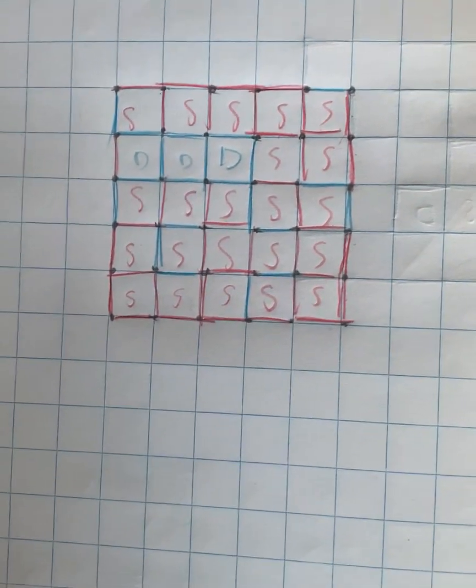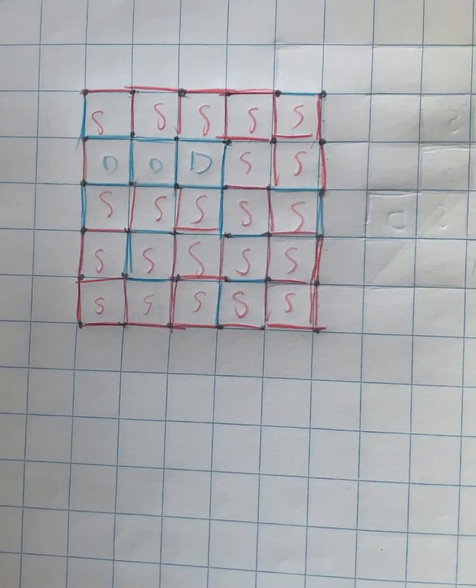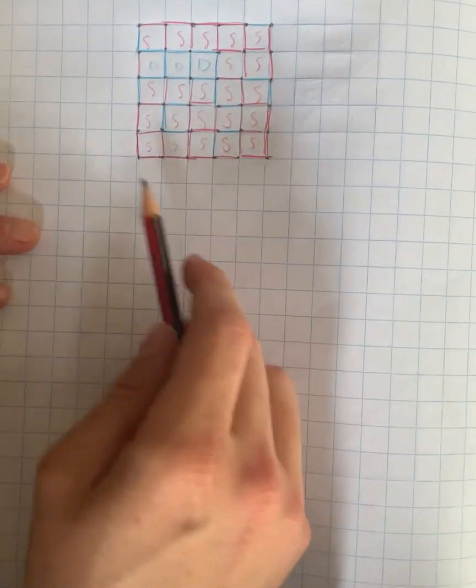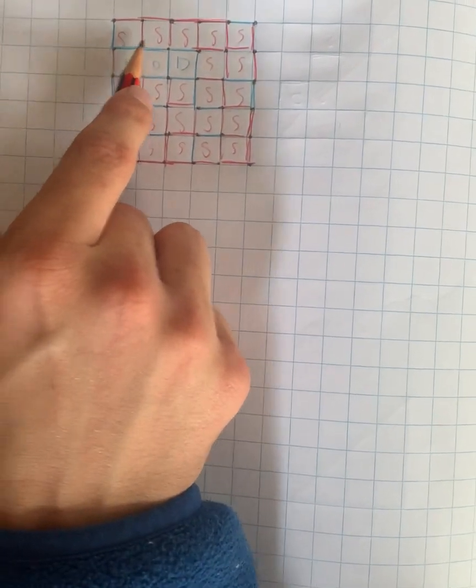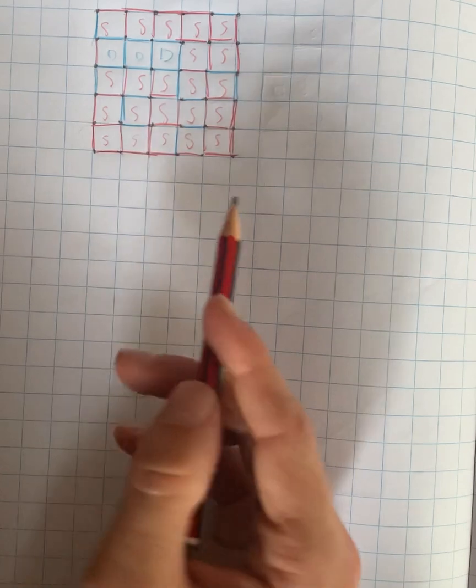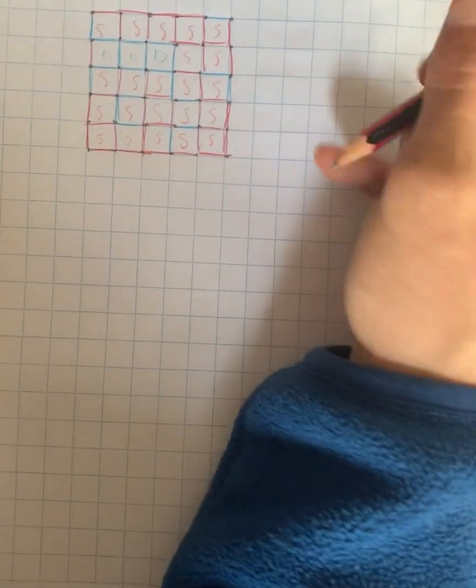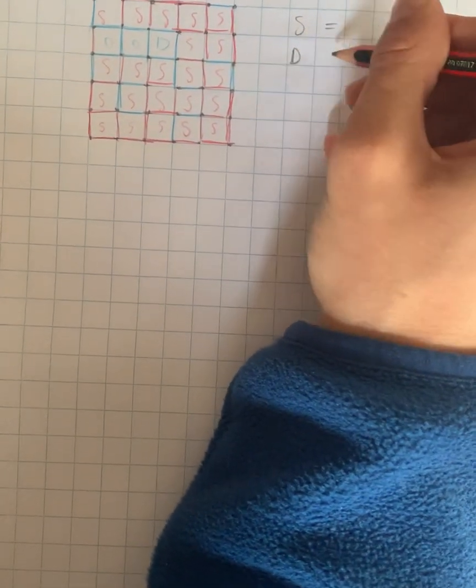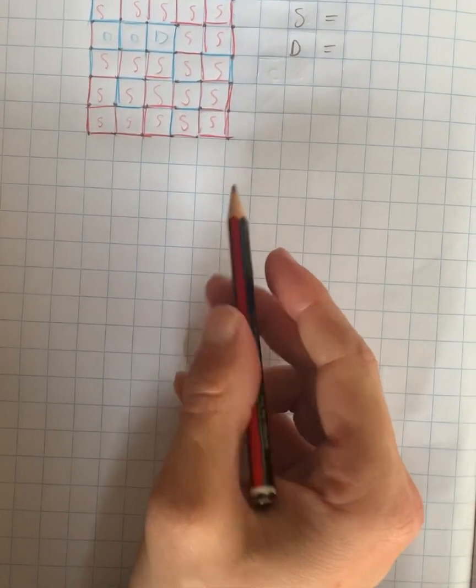And now what we're going to do is this is where the area and the perimeter comes into it. So as you can see, we put out the names of our, the first letter of our first names to indicate that we've got the squares. And so I can work out the area that S had and the other area that Dylan had or D had.